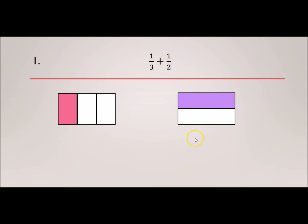We have a problem though, because when we try to add 1/3 plus 1/2, they're not the same amount or the same pieces. So we have to find what we call the common denominator to make them the same amounts on both boxes so we can put them together.